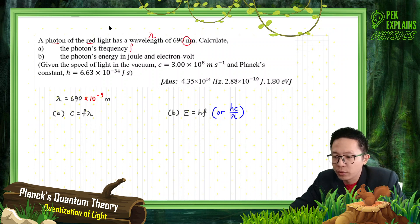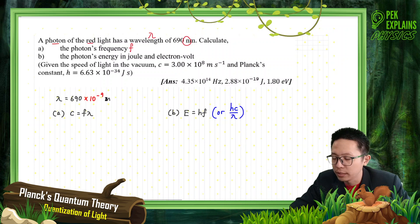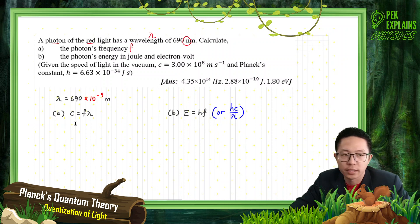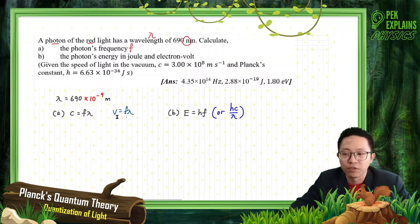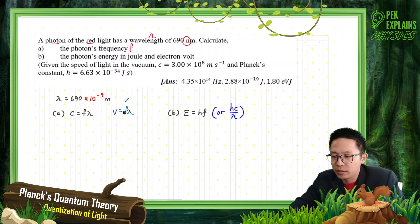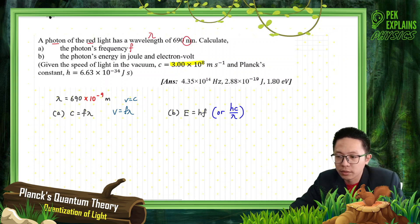We need to find the photon frequency F. Let's do part A, the frequency. We have the wavelength 690 nanometers — change to meters, exponent negative 9. For the frequency of the photon, just use the usual formula: C equals F lambda. This is from the usual formula V equals F lambda, just that now the velocity is the speed of light. V is equal to C, which is 3 times 10 to the 8.